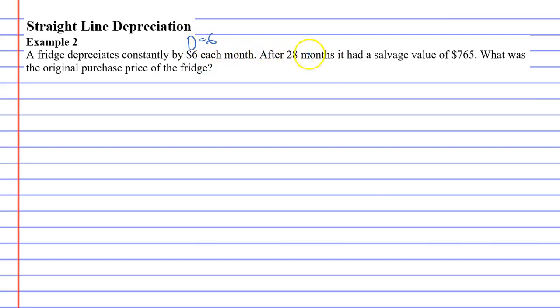And after 28 months, which is our number of time periods, 28, it had a salvage value of $765. So S is $765. What was the original purchase price? This means the V0 part, the original purchase price of the fridge.